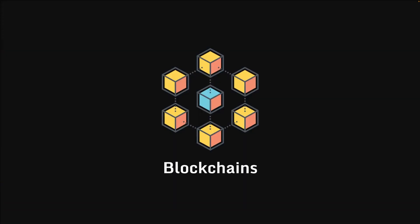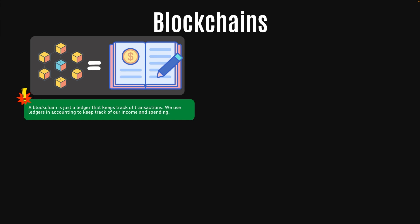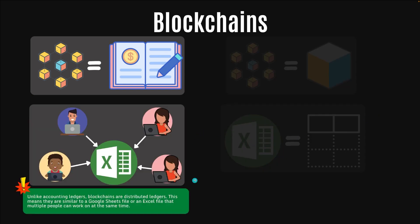First we have blockchains. So what are blockchains exactly? A blockchain is just a ledger that keeps track of transactions. We use ledgers for accounting to keep track of our income and expenses. But unlike accounting ledgers, blockchains are distributed ledgers. That means it's similar to Google Sheets or an Excel file that multiple people are working on at the same time.